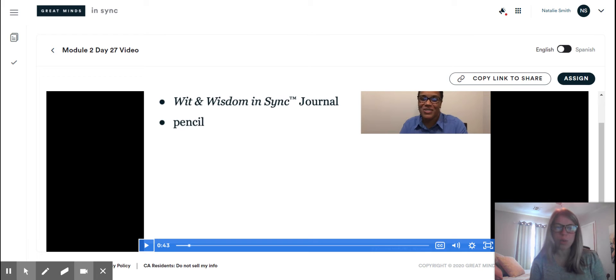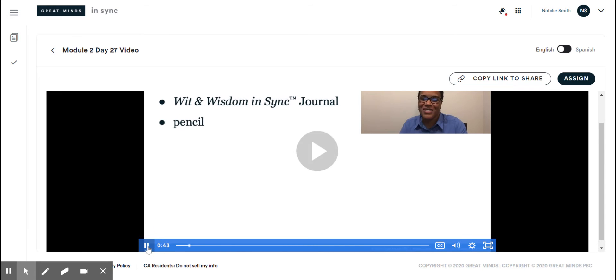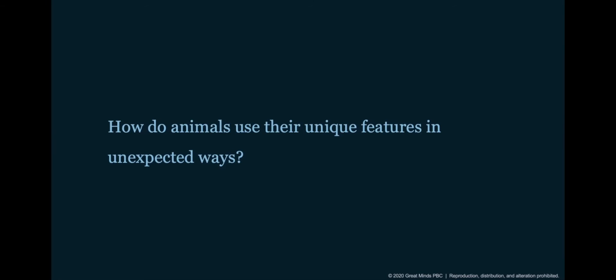What does looking at text features reveal to us? Here we go. In previous work you began identifying the author's point and reasons and had an opportunity to write a conclusion. Today you'll think more about text features and prepare to write an informative paragraph. But before we jump into our work for today, let's take a moment to review the question that focused our work for the text Never Smile at a Monkey. And that question is, how do animals use their unique features in unexpected ways? And you'll be answering this question as you plan for focusing question task 5.